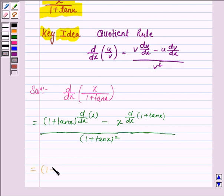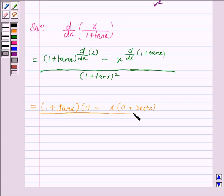Again this is equal to 1 plus tan x into derivative of x with respect to x is 1 minus x into the derivative of 1 plus tan x. Now derivative of 1 is 0 and derivative of tan x is secant square x. So it is 0 plus secant square x upon 1 plus tan x whole square.